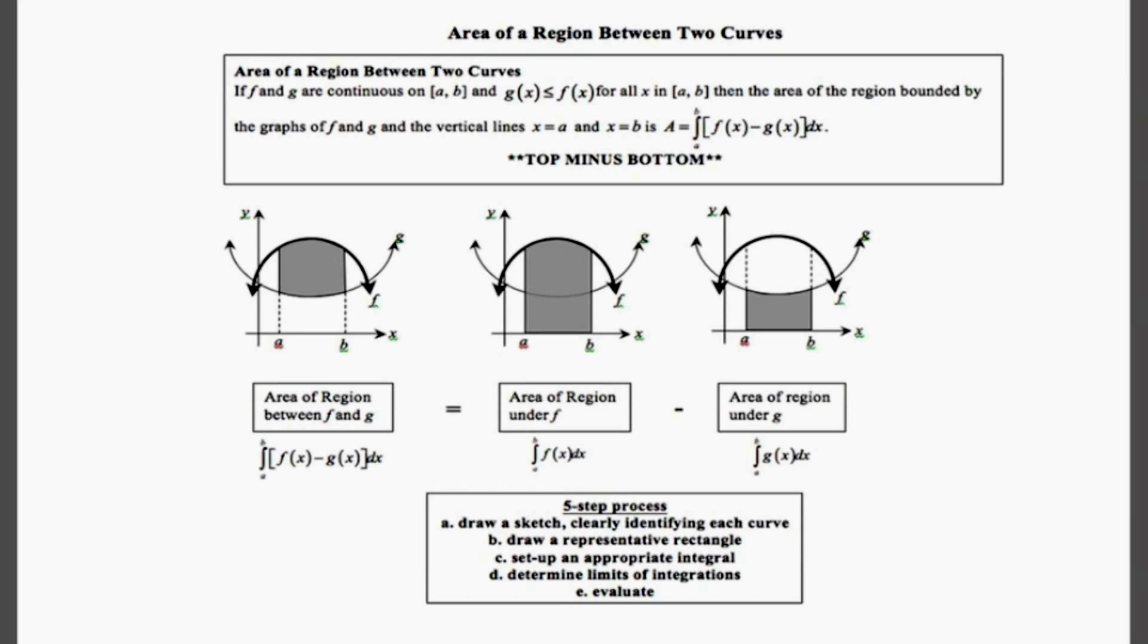The area of a region between two curves: If f and g are continuous functions on an interval a,b and g of x is less than f of x for all x in the closed interval a,b, then the area of the region bounded by the graphs of f and g and the vertical lines x equals a and x equals b is the definite integral of the difference of these two functions.